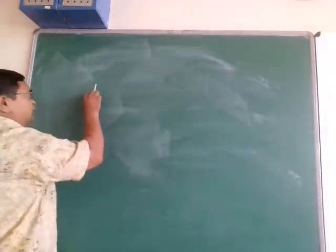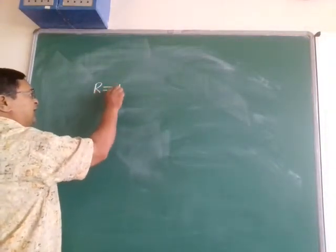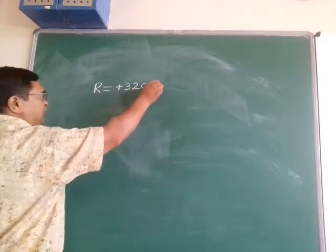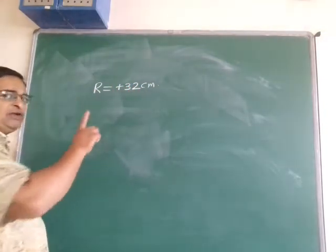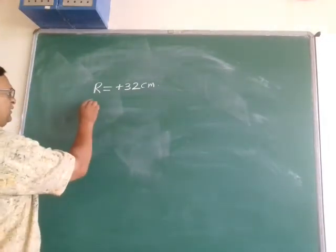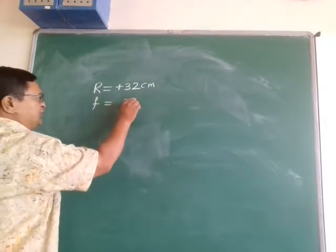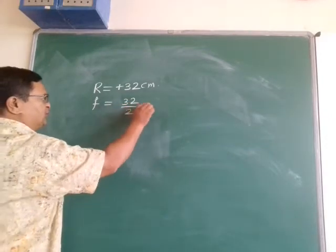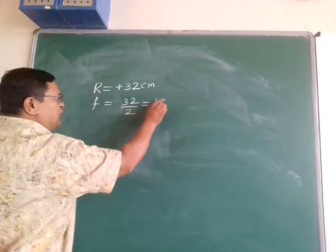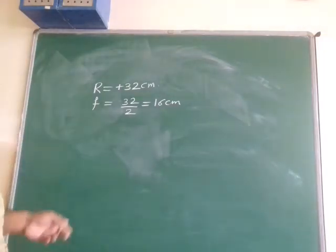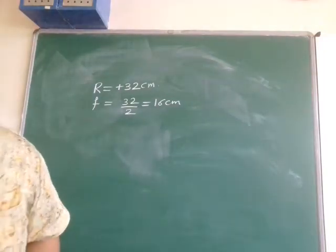The radius of curvature of the convex mirror is 32 centimeters. Since it is convex, I will take it as plus 32. The focal length is half of the radius of curvature, so 32 divided by 2 gives plus 16 centimeters. This is the answer for the first in-text question on page number 171.